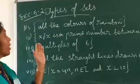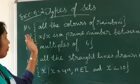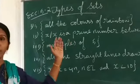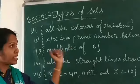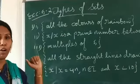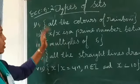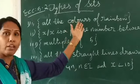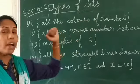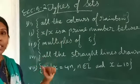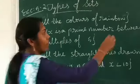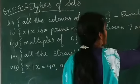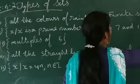Now, let us discuss a few questions from exercise 5.2. In the first question, we have to classify the given sets as finite sets, infinite sets, or empty sets. In the case of finite sets, we have to write down the cardinal number of those sets. The first question: all colors of the rainbow. We can count the number of colors of rainbow. Therefore, it is a finite set and the cardinal number is 7.